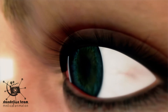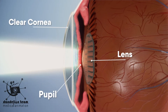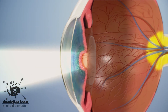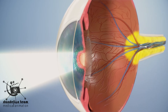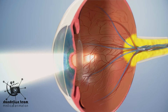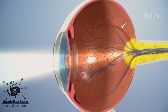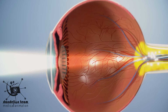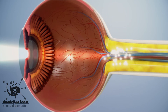Light rays enter the eyes through the clear cornea, pupil, and lens. The lens is positioned behind the colored part of your eye, the iris. The lens focuses the light rays directly onto the retina, the light-sensitive tissue lining the back of the eye. These light rays are converted into impulses and sent to the brain.